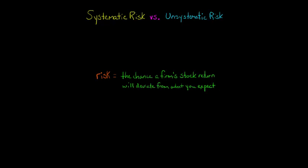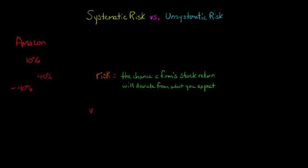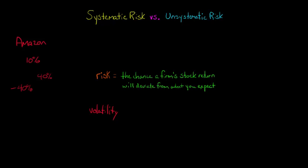Let's say that you buy stock in Amazon.com and you have a certain expectation — you think you're going to get a 10% return on your investment in Amazon. But that return could be 40%, or negative 40%, or even 80%. There's a wide range of distributions, and Amazon's stock price is going to fluctuate up and down on a daily basis. Some prices will fluctuate more than others, and that will be captured by the stock's volatility, which is the standard deviation of the stock's returns. Volatility is a measure of total risk.